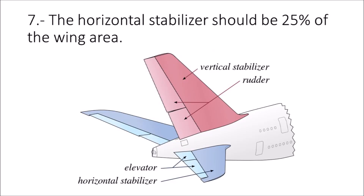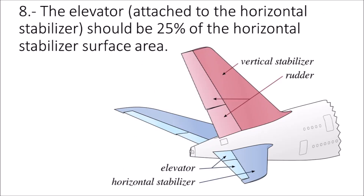The horizontal stabilizer should be 25% of the wing area. The elevator that is attached to the horizontal stabilizer should be 25% of the horizontal stabilizer surface area.